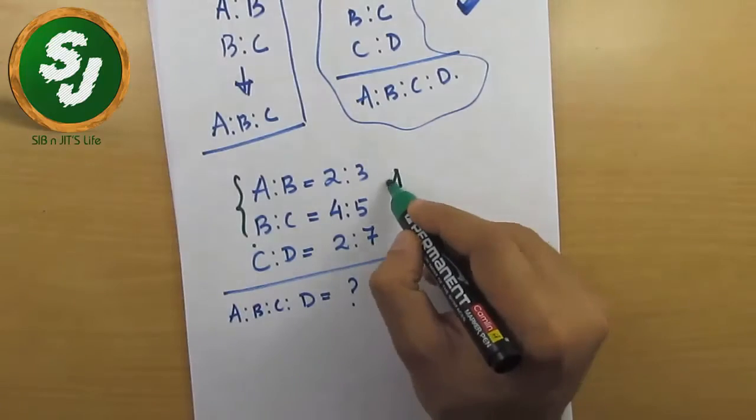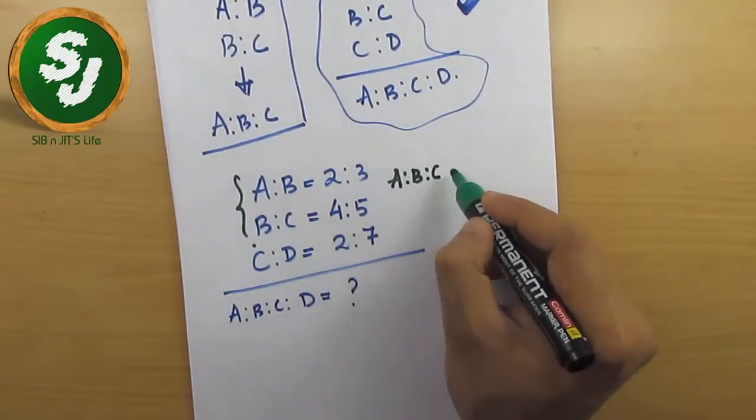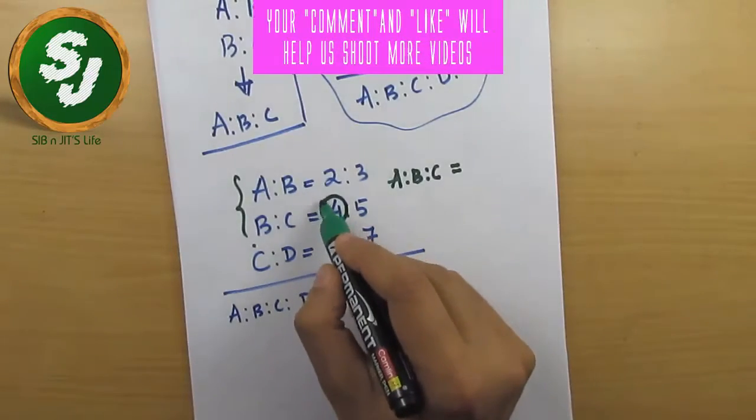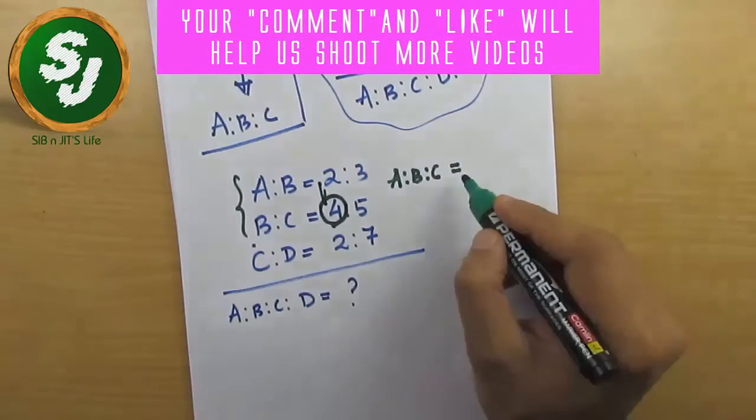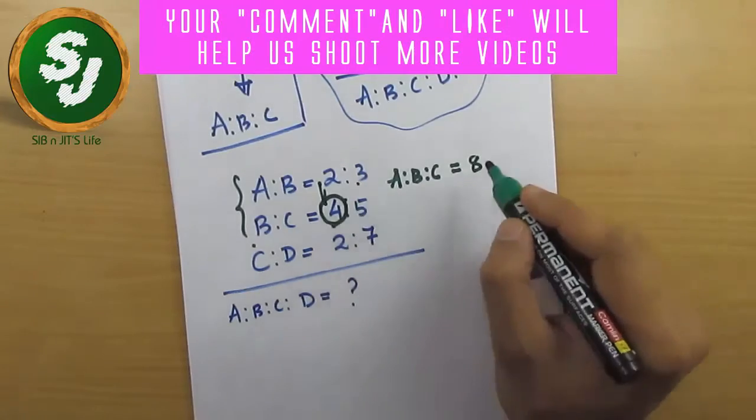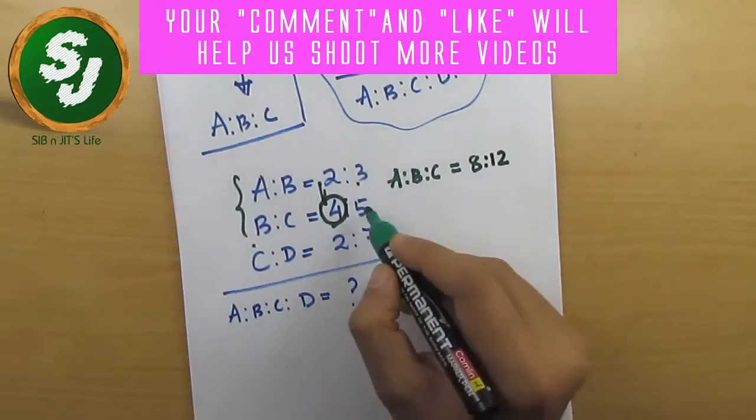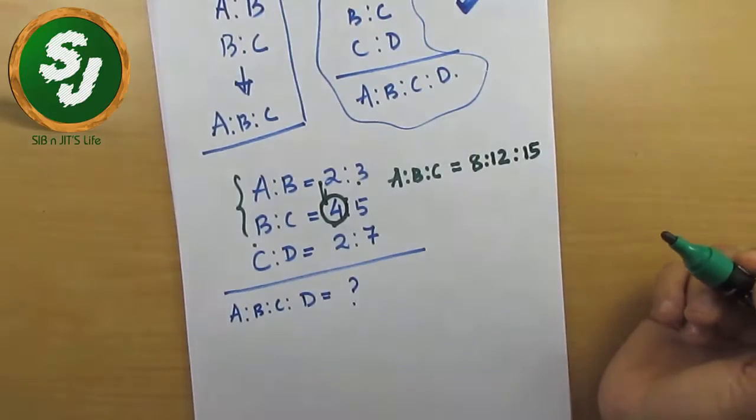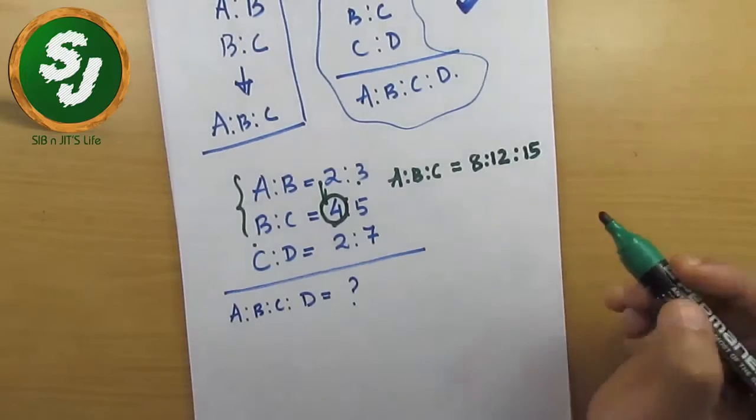So A is to B is to C equals - pick this number 4, multiply with 2. First step: 4 into 2 is 8, then 4 into 3 is 12, 5 into 3 is 15. So A is to B is to C is 8 is to 12 is to 15. This is the first step over.